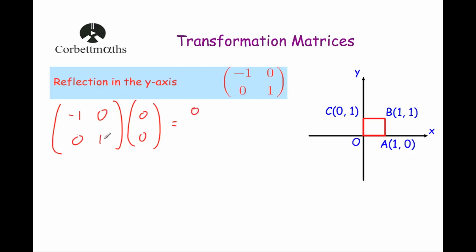And then the second row by the column: 0 times 0 is 0, 1 times 0 is 0, adding them together is 0. So the point at the origin will stay where it is.